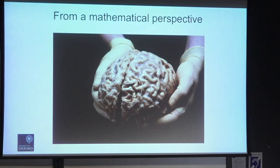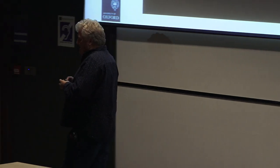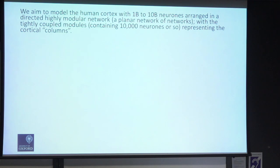So here's the object of interest. We've all got one of these bodies — it booted up nicely in all our cases — and a kilogram and a half of wetware. Where does all this come from? How can I do all this? How can I feel like I do? I'm going to try and model the human cortex, and that's going to involve setting up a network with 1 billion to 10 billion neurons. These are very, very large networks for simulation by anybody's standards.